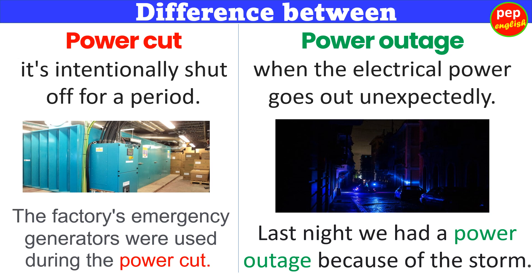Difference between power cut and power outage. A power cut is intentionally shut off for a period. Example: The factory's emergency generators were used during the power cut. A power outage is when the electrical power goes out unexpectedly. Example: Last night we had a power outage because of the storm.